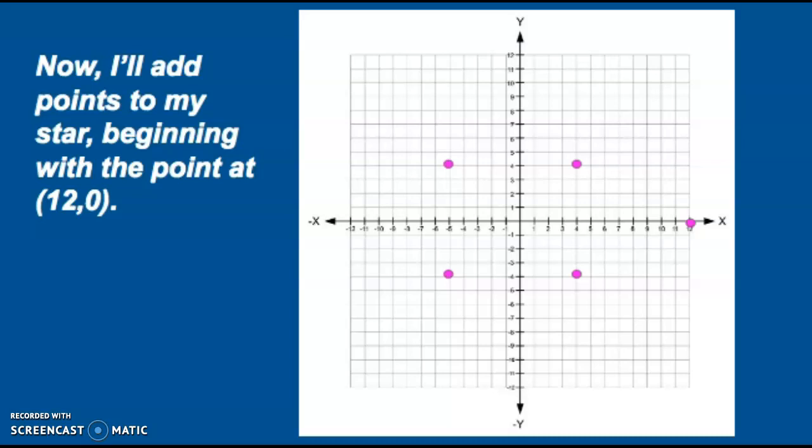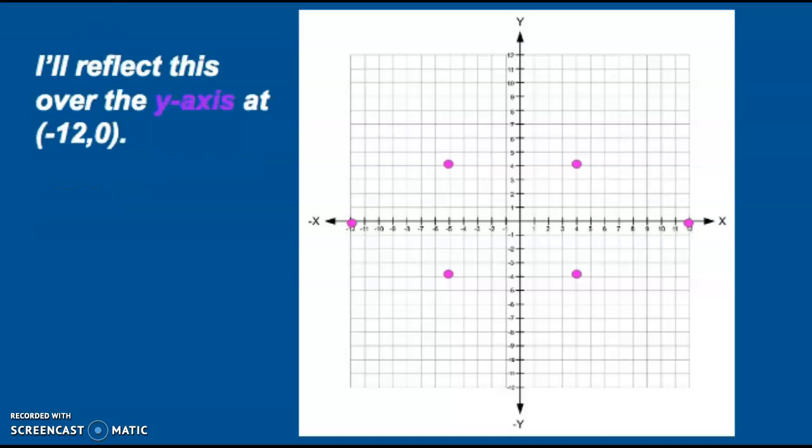Now I'll add points to my star, beginning with the point at (12,0). I want to reflect this point across the y-axis. Do you know what that coordinate will be? You're right. It's (-12,0).